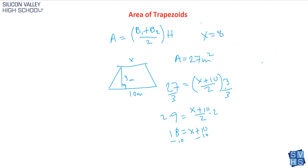So x = 8, and that would be your base 1 in meters. The same approach works if they give you base 1, base 2, and the area but not the height — just plug in x for h and solve backwards. That's the area of trapezoids. They're pretty straightforward, and I think you'll ace this section. Good luck!